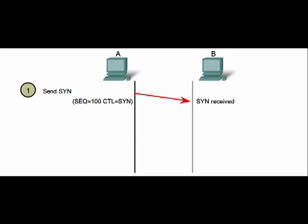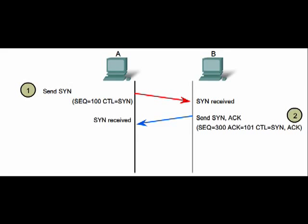First, the initiating client sends a TCP segment containing an initial sequence value, which serves as a request to begin a communication session with the destination host. Next, the destination responds with a segment containing an acknowledgement value equal to the received sequence value plus one. This acknowledgement value enables the source client to tie the response back to the original segment that it sent to the destination.